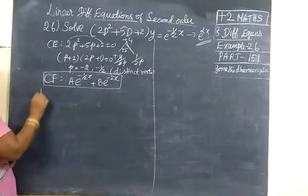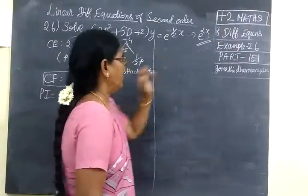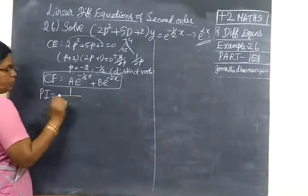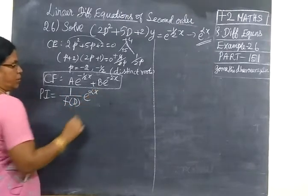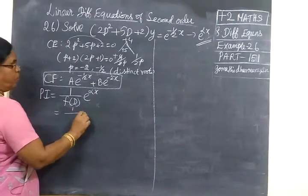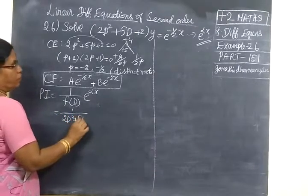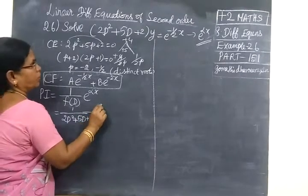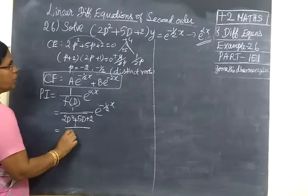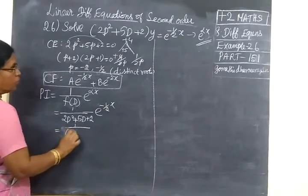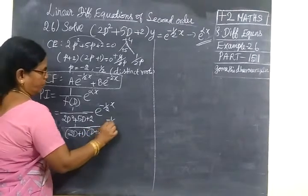Next we find the particular integral. When the right-hand side is e^(αs), the particular integral is PI = 1/f(D) × e^(αs). Here f(D) = 2D² + 5D + 2, split into factors (D + 2)(2D + 1), applied to e^(−s/2).